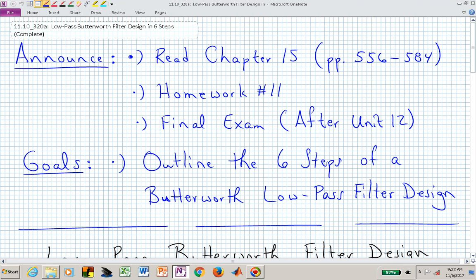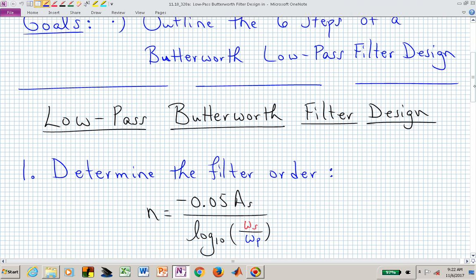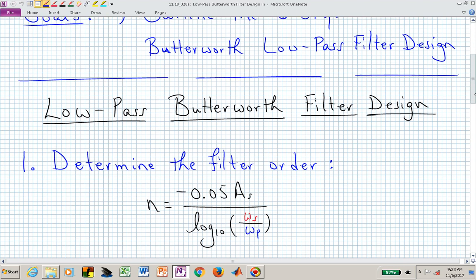Now what we want to do in this video is simply present and read through the six steps of a Butterworth filter design, and it's a low pass filter. The very first step is we need to determine the filter order. We need to know the attenuation at the stopband frequency. A sub S is some negative number of dB, omega sub S is the stopband frequency, and omega sub P is our passband frequency. From that we get N. Maybe N is 2.7, which means we need N equal to 3.